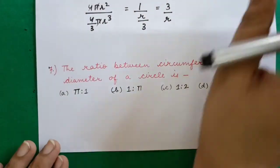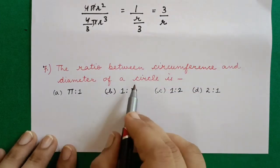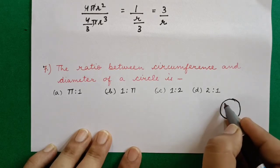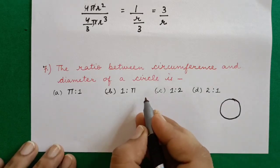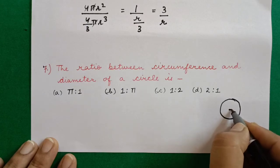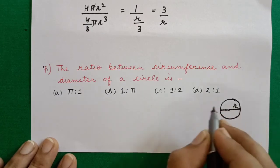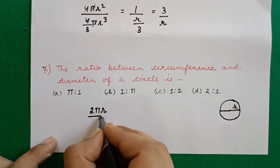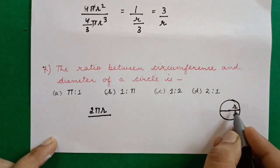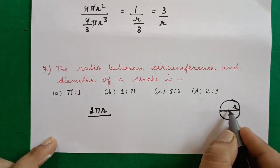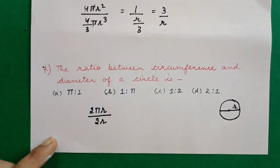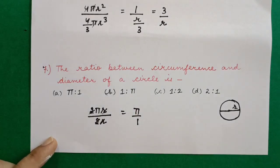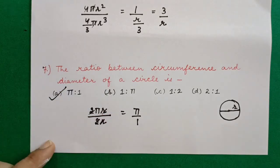Question 7: Find the ratio between circumference and diameter of a circle. Circumference = 2πr. Diameter = 2r (since diameter is twice the radius). Ratio = 2πr ÷ 2r. Cancel 2 and 2, cancel r and r, giving π/1. So the ratio of circumference to diameter is π:1.